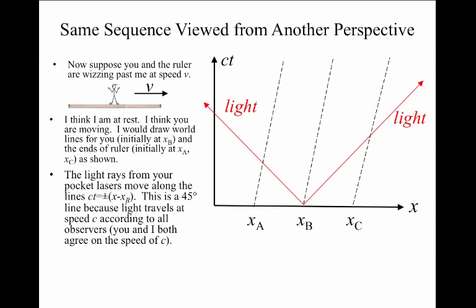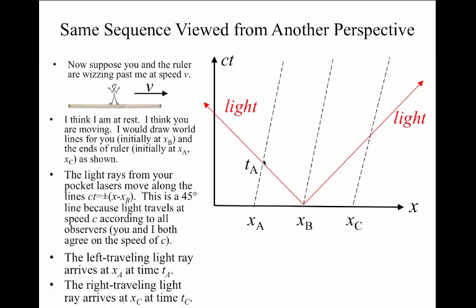So I'm going to draw world lines from the flash point at location B off into the left and off into the right that are at 45 degrees. The left ray should arrive at location X sub A at a time T sub A. And I just look here on this graph when those two world lines, the one for the tip of the ruler and the one for the light ray intersect. The right ray arrives at location XC at a time T sub C. To judge what that time is, I just look at when the light ray world line and the world line for the tip of the ruler intersect.